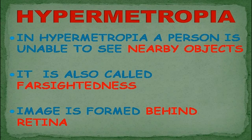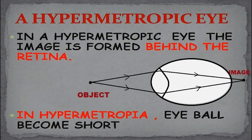In hypermetropia, a person is unable to see nearby objects but can clearly see far objects. Hypermetropia is also called far-sightedness. In hypermetropia, the image is formed behind the retina because the converging power of the human eye lens becomes weak. You can see in the picture that light from objects is converged by the eye lens behind the retina, not on it.